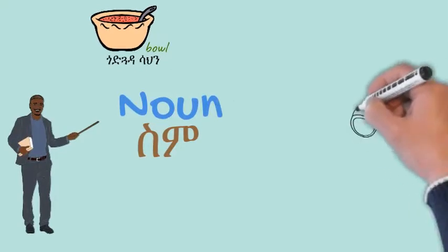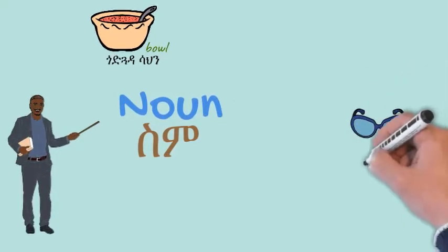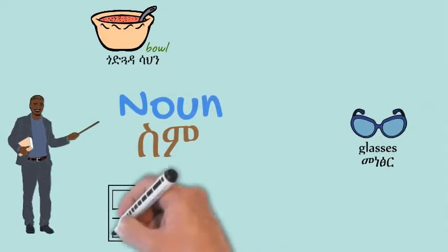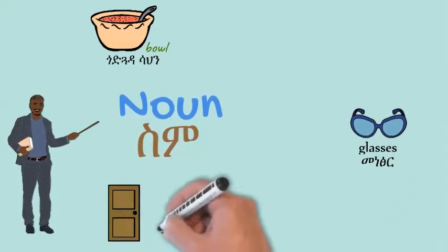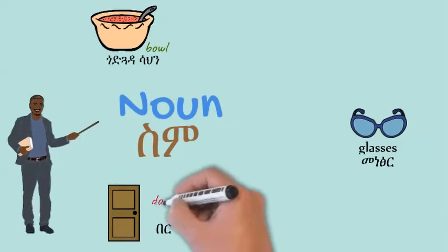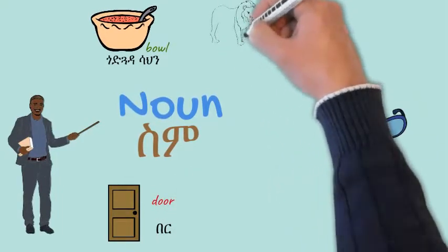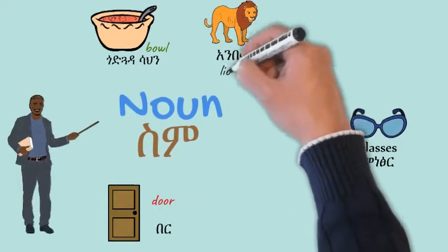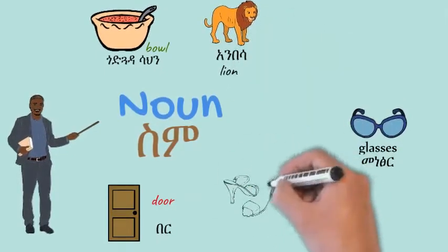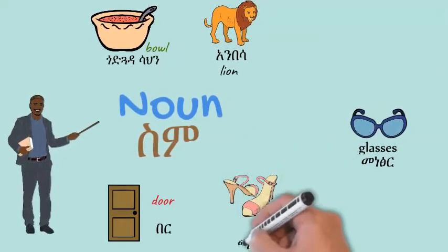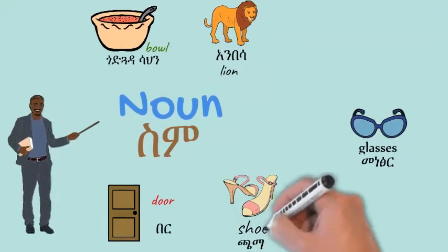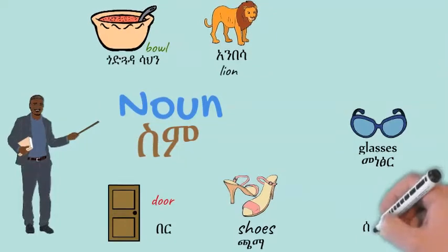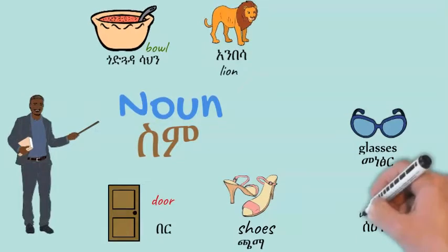We call this ball — menacer. Glasses. Burr, a doll. A lion, an anbecile. Shoes — cham. Watch — sa'at.